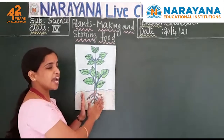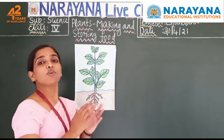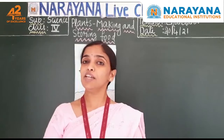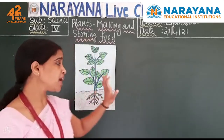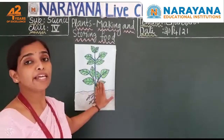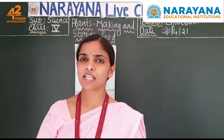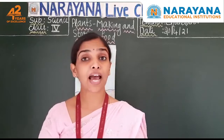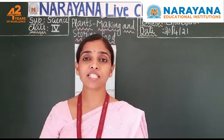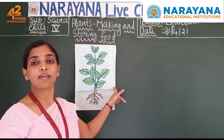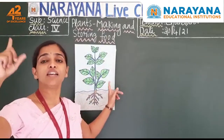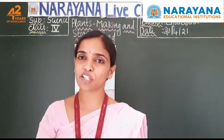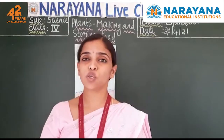Green plants are preparing food for all of us. All other living beings on the earth are dependent on plants for food. How do plants prepare their food? By using a process called photosynthesis. What does 'photo' mean? Light. What does 'synthesis' mean? To combine. So plants make use of the sun's energy and combine a few things to prepare food. That is called photosynthesis.